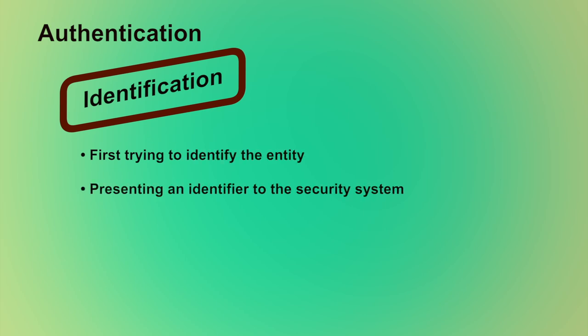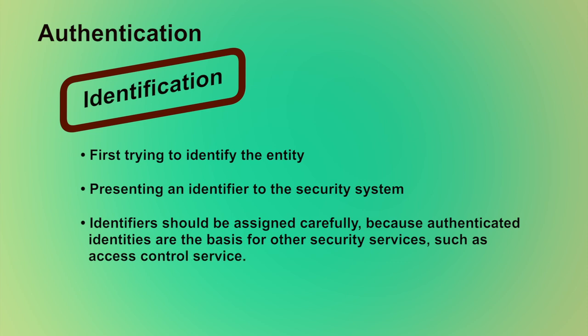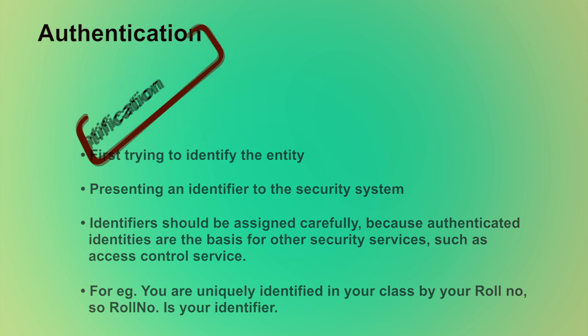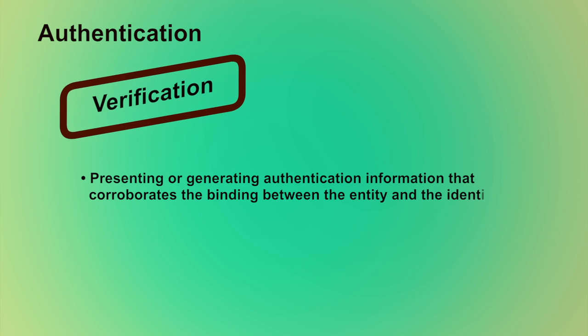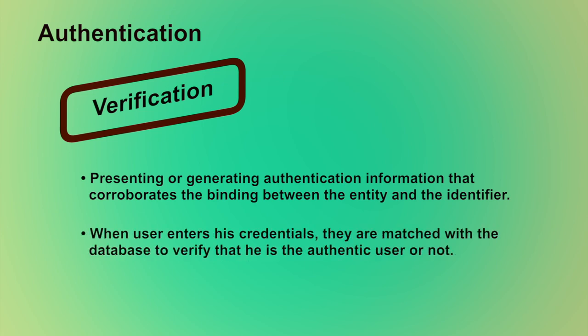In the identification step, we first try to identify the entity by presenting an identifier to the security system. An identifier should be assigned carefully, as authenticated identities are the basis for other security services such as access control. For example, you are uniquely identified in your class by your roll number. In the verification step, authentication information is presented or generated to corroborate the binding between the entity and the identifier — like when a user enters credentials, they are matched against the database to verify authenticity.